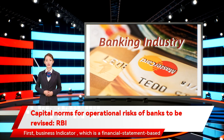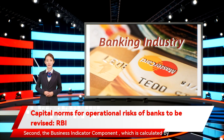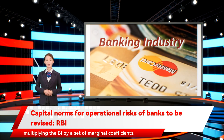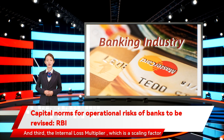The approach comprises three components. First, the business indicator, which is a financial statement-based proxy for operational risk. Second, the business indicator component, which is calculated by multiplying the BI by a set of marginal coefficients. And third, the internal loss multiplier, which is a scaling factor based on a bank's average historical losses and the BIC.